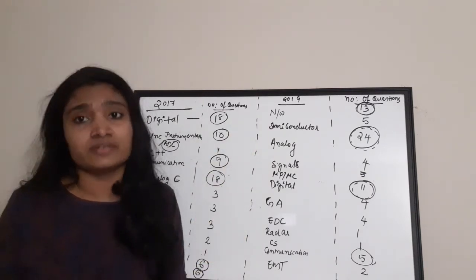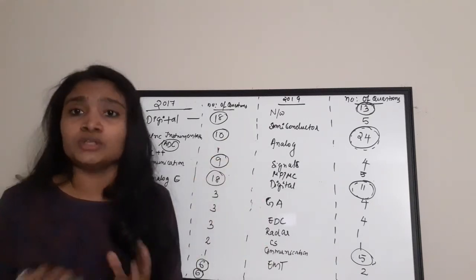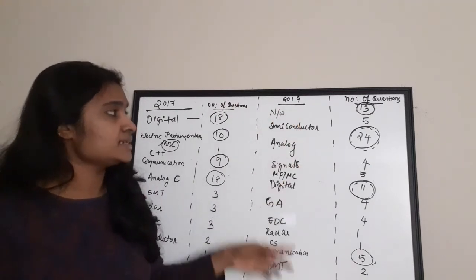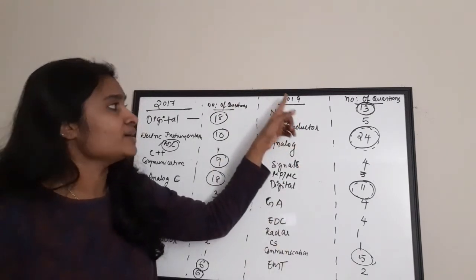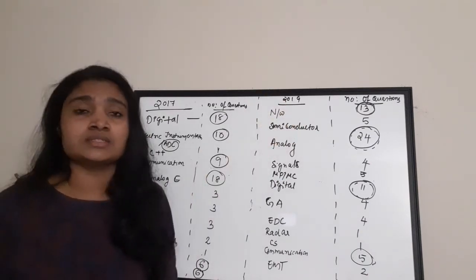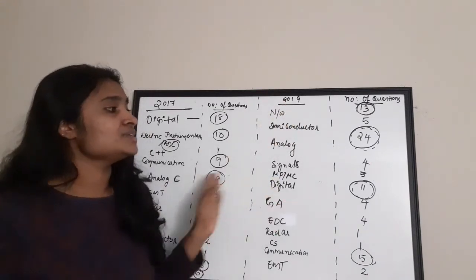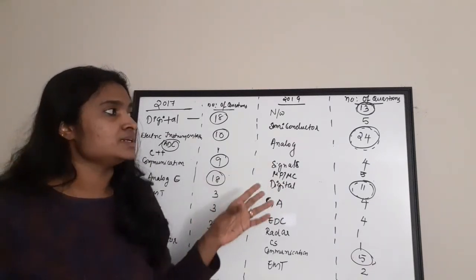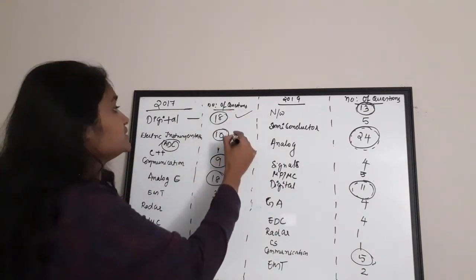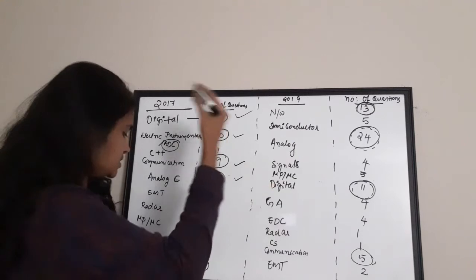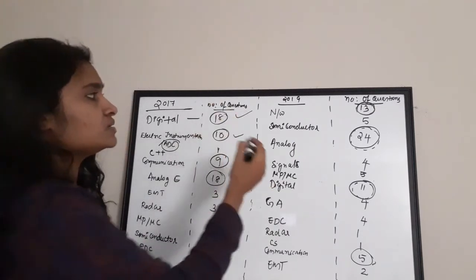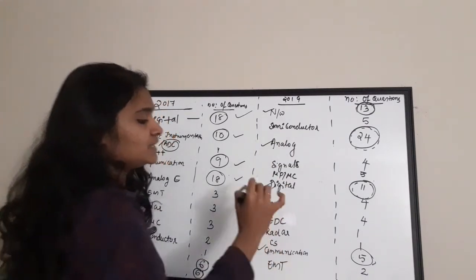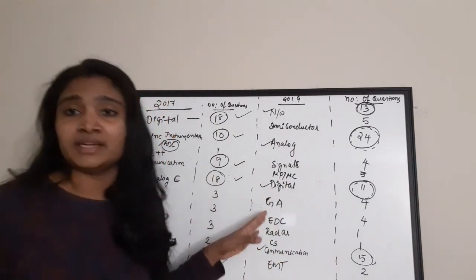So the subjects you must first cover are: Digital Electronics, Analog Electronics, Network Theory, Electronic Instrumentation, and Communication Systems — these are confirmed by both the 2017 and 2019 question paper data. Cover these priority subjects first, then move to the remaining ones.